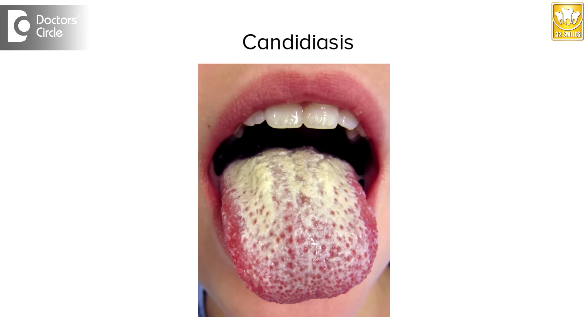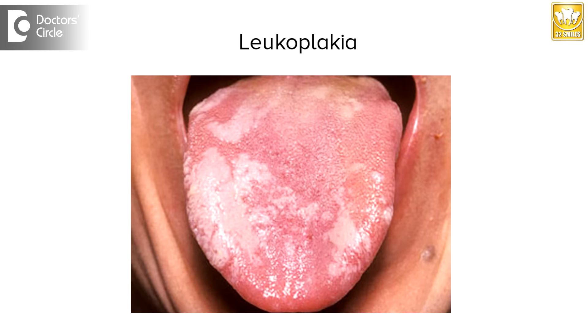Most commonly what we see is Candida, which is most commonly seen in HIV patients and immunocompromised patients. There is something called Leukoplakia, which is again a white lesion on the tongue most commonly seen in patients having a smoking habit — chronic smokers.